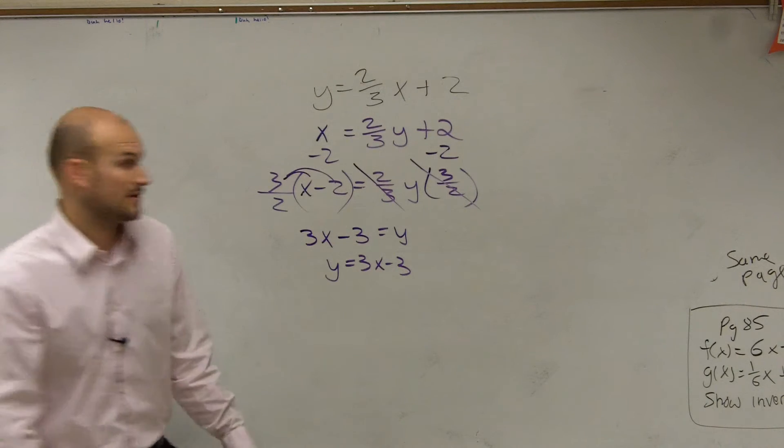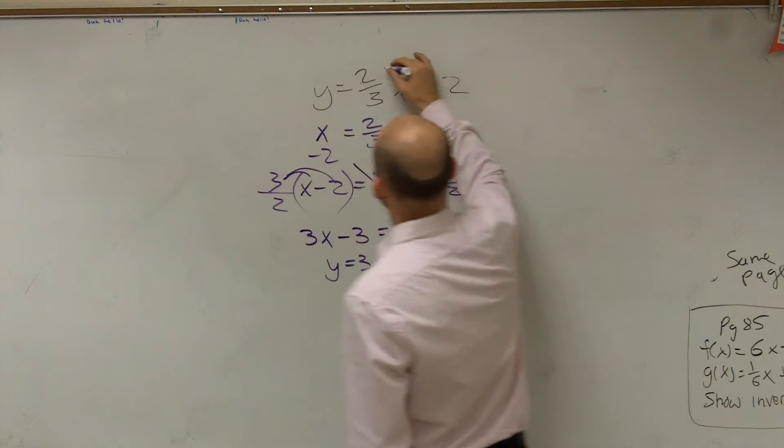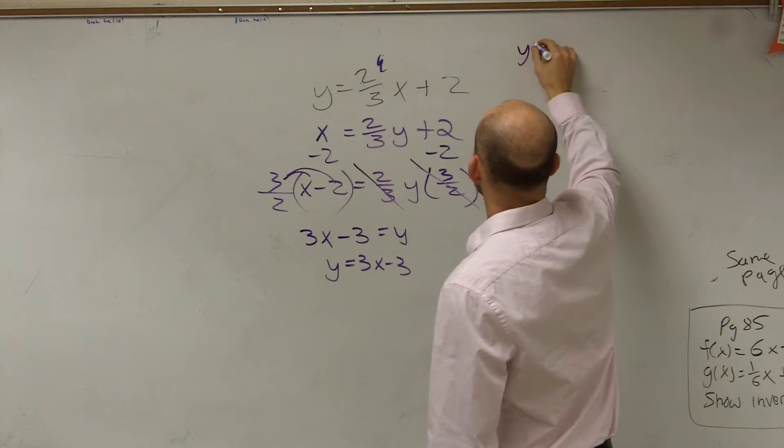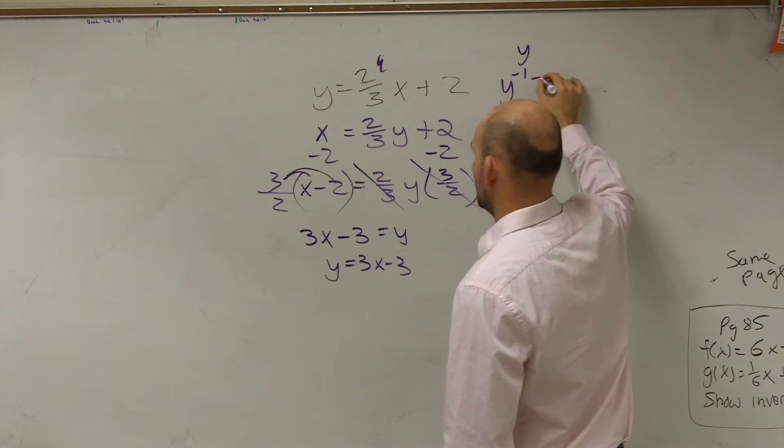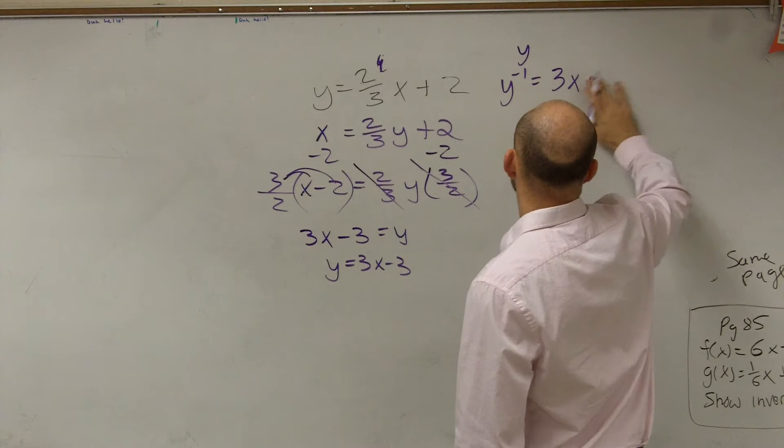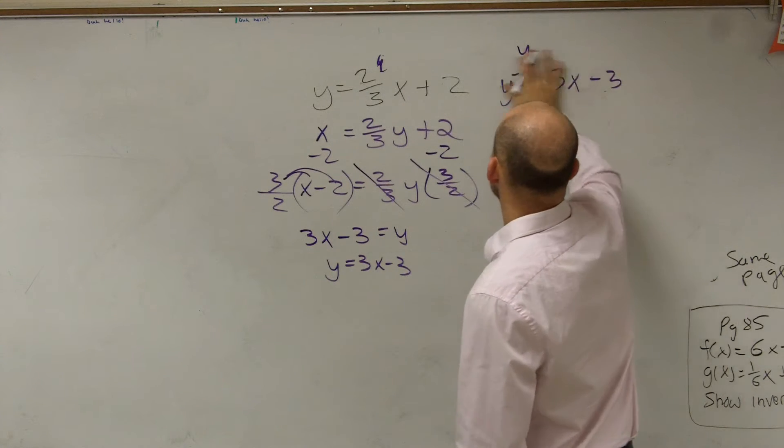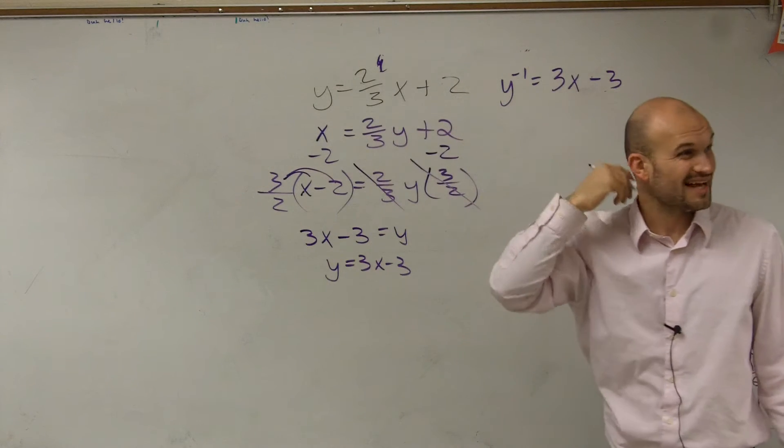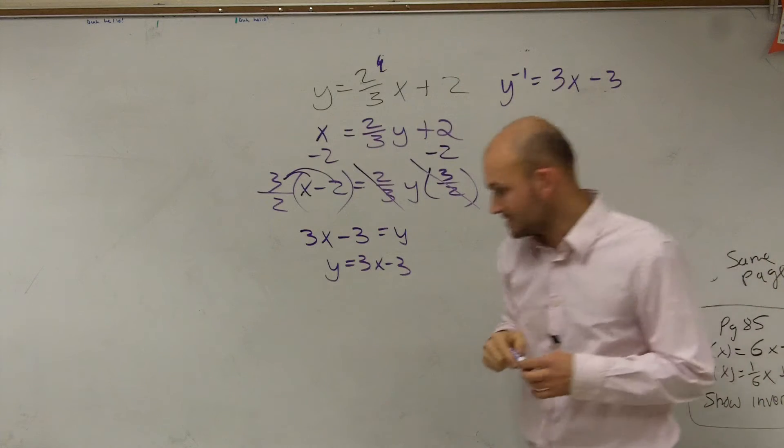Now we've got to graph both of them. So here's my function, we'll just leave it there. Now, y inverse is equal to 3x minus 3. OK? Does everybody see what I did, how I found the inverse? So now let's graph both of them and see how they relate to each other.